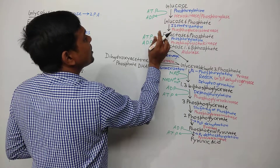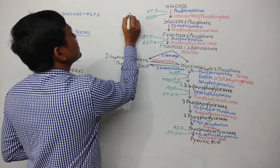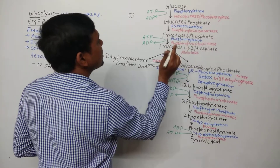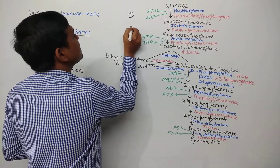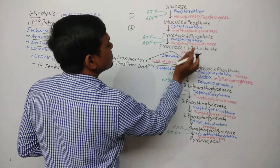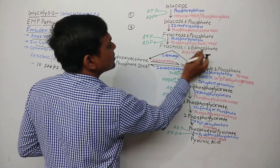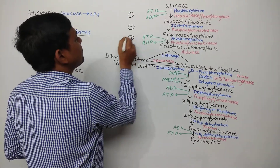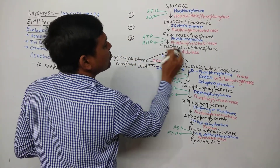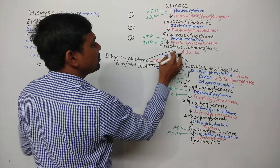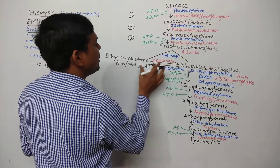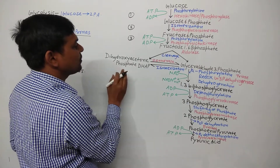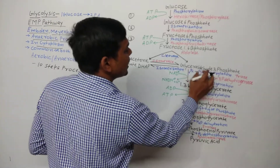Let's look at the first five steps. Step 1: Glucose is converted to glucose 6-phosphate. Step 2: Glucose 6-phosphate is converted to fructose 6-phosphate. Step 3: Fructose 6-phosphate is converted to fructose 1,6-bisphosphate. Step 4: Fructose 1,6-bisphosphate undergoes cleavage, splitting into two molecules.